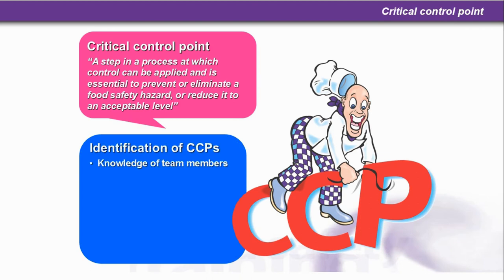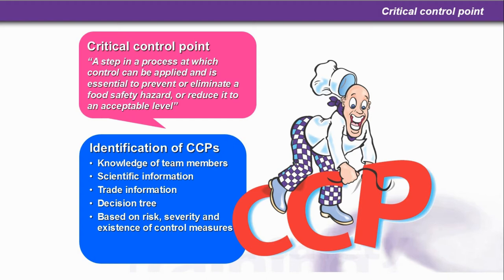Identification of CCPs can be dealt with through the knowledge of team members, scientific information, trade information, and a decision tree — which we'll look at in a second — based on risk, severity, and the existence of control measures. Codex states that you must minimize the number of CCPs, with an absolute maximum of around 6. You don't want to duplicate CCPs because this is where you'll be checking data, and too many check points would be far too expensive, especially from a staffing point of view.